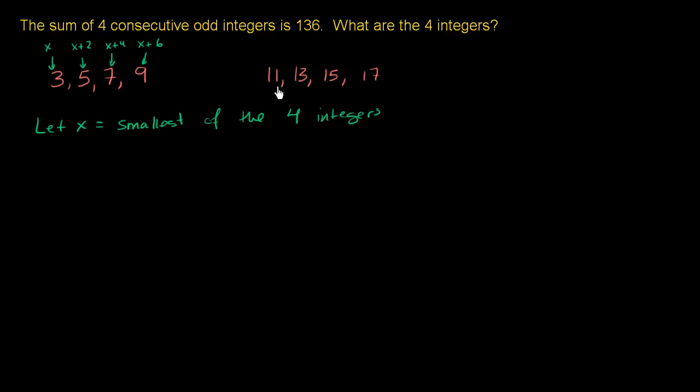And you see that again right over here. If this was x, then this is x plus 2, this is x plus 4, and this is x plus 6. So in general, if x is the smallest of the integers, we can define the other three as x plus 2, x plus 4, and x plus 6. Let's take the sum of them and set that equal to 136, and then solve for x.